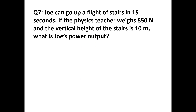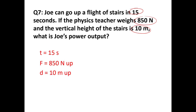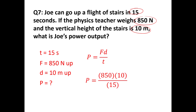Joe, a physics teacher, goes up a flight of stairs in 15 seconds. He weighs 850 newtons, and the vertical height of the stairs is 10 meters. We're asked for power, so we use the longer equation P = FD/t. Plugging in 850 newtons, 10 meters, and 15 seconds gives a power of 567 watts.